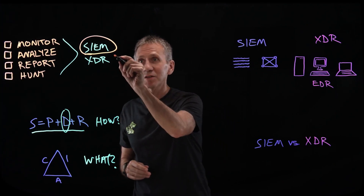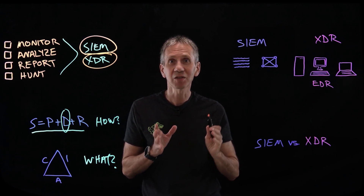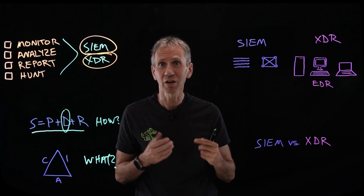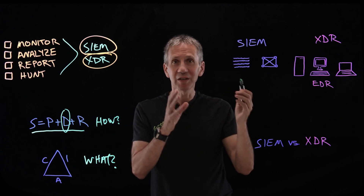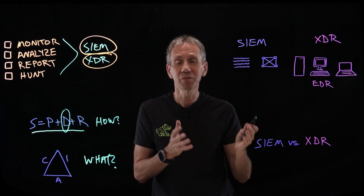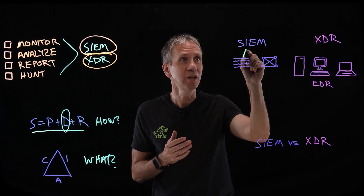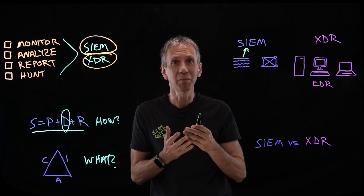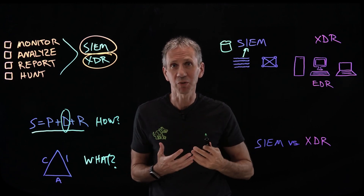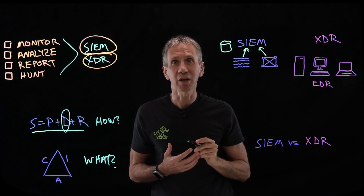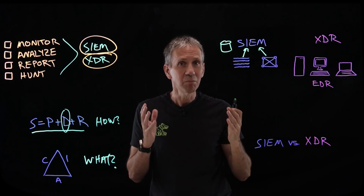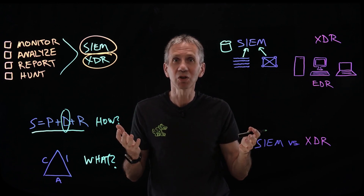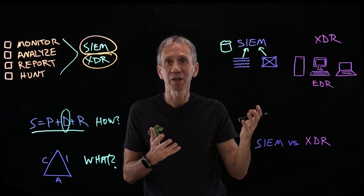Now let's look at XDR — Extended Detection and Response — and compare it with the SIEM. SIEMs largely came from two camps: log management vendors, who centralized system logs from devices, operating systems, databases, and applications, or network-focused vendors doing network behavior anomaly detection. Most SIEM vendors came from one of those views. XDR, by contrast, grew out of EDR — Endpoint Detection and Response — and represents a more top-down approach.